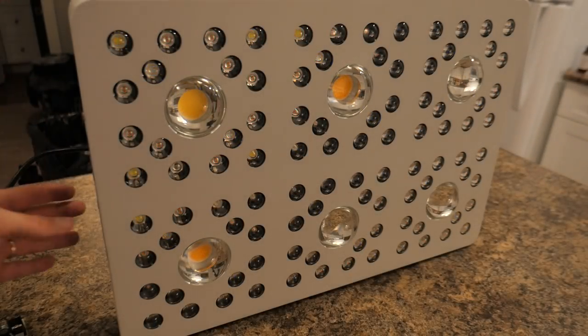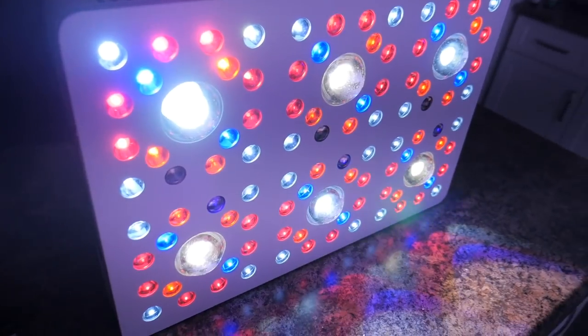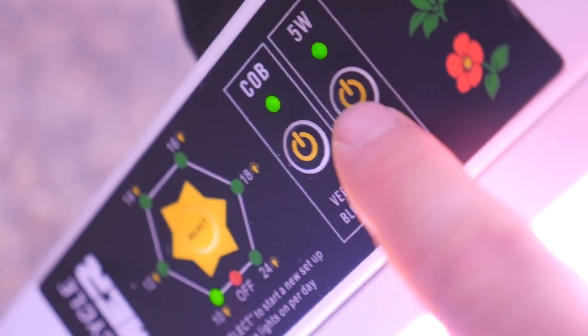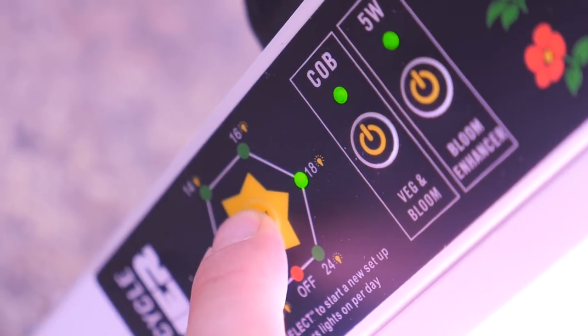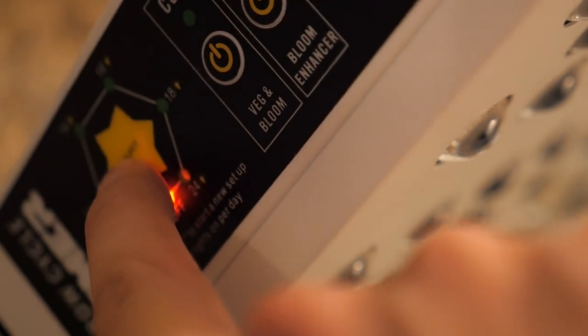So let's turn it on. So it seems everything is working now. The lights come on fine. Over here you can see the COB lights on, the 5 watts on, and the timer's on. So we can change the timer. Timer's working now. 24 hours. Turn it off. So that works fine. Let's check the power buttons now.